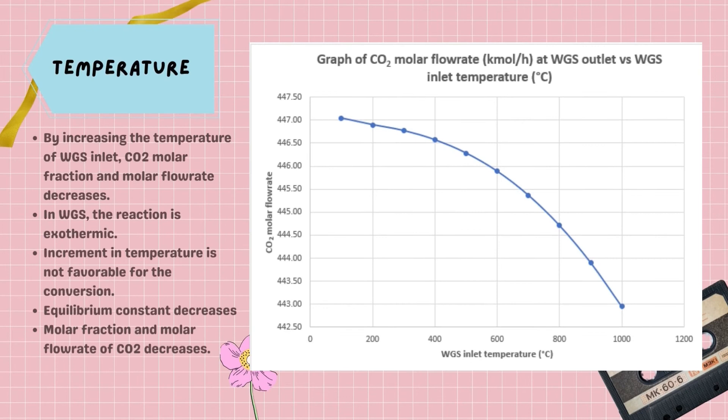Secondly, the increment of temperature of WGS in the stream shows a negative effect on carbon dioxide molar flow rate. Since the reaction taking place in the reactor is exothermic, the increment of temperature is not favorable for the conversion. This will reduce the molar fraction and molar flow rate of carbon dioxide at the outlet of the reactor. Thus, WGS reactor should operate at the appropriate temperature to avoid reducing the conversion.